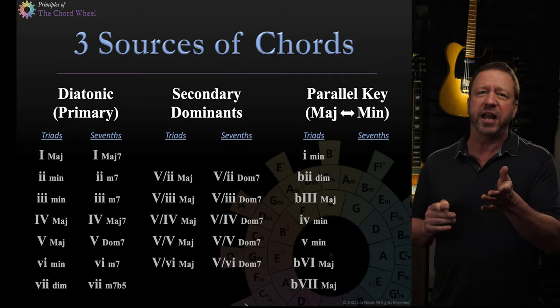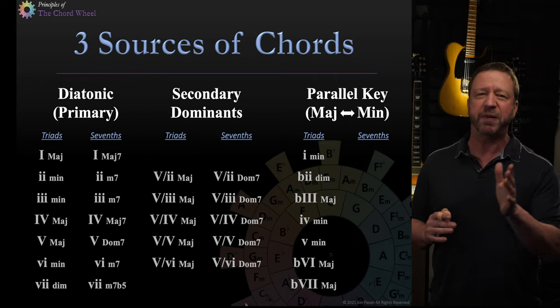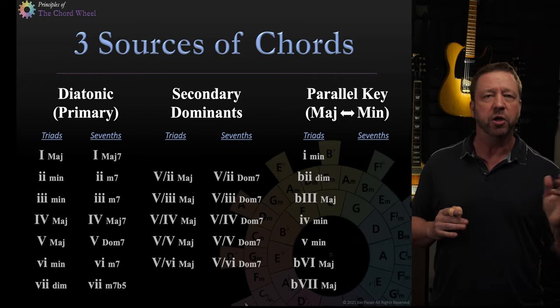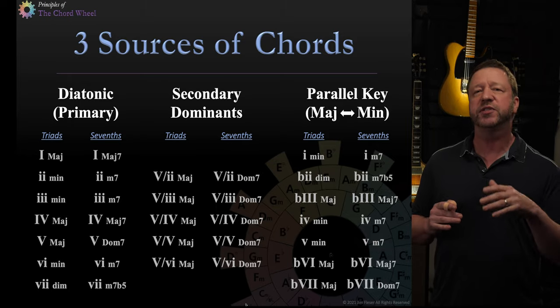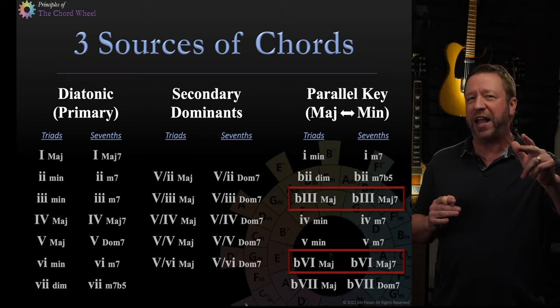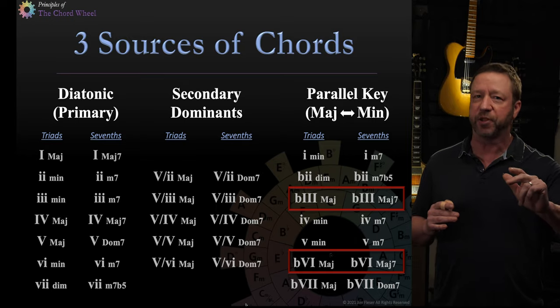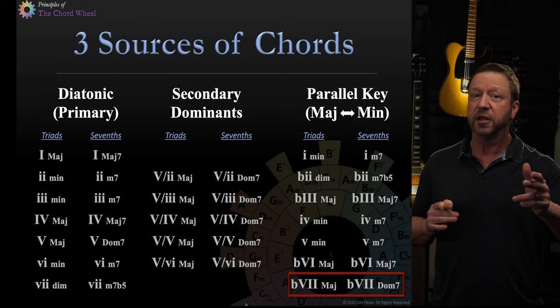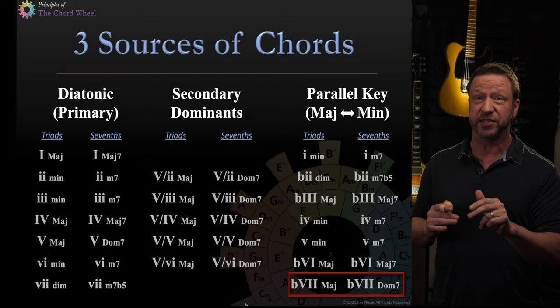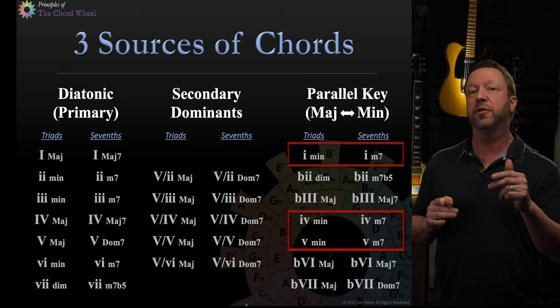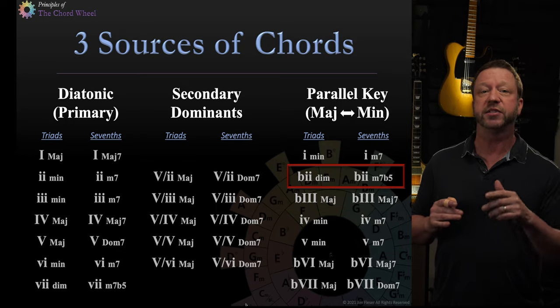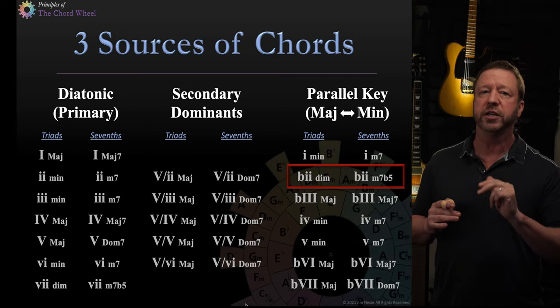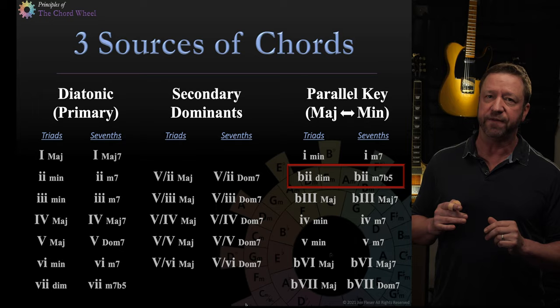Now the parallel minor, we have the same correspondence to the majors and minors as we do with the diatonic key, but it's a little bit different. So in this regard then, the flat three and the flat six are going to be major sevenths. The flat seventh would be a dominant seventh. And then the one, the four, and the five would be minor sevenths. And then last but not least, our flat two chord is going to be the minor seventh flat five.